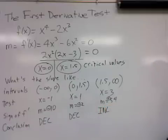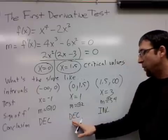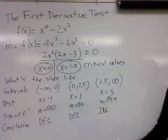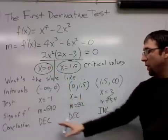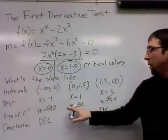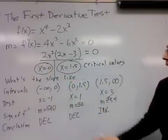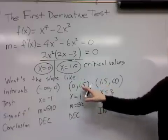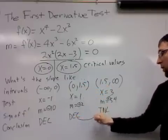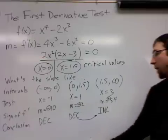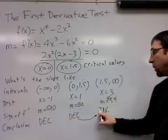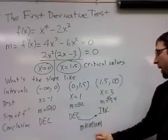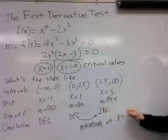So what's happening with our graph? It's falling, and then it continues to fall, and then it rises once it crosses x equals 1.5. So even though 0 was a critical value, the sign of the slope stayed the same as it crossed over x equals 0. So 0 is not going to produce a maximum or minimum point, but at 1.5, at x equals 1.5, the slope changed from a negative slope to a positive slope. So the graph was falling, and then it was rising, which is telling me that there's a minimum point at x equals 1.5.